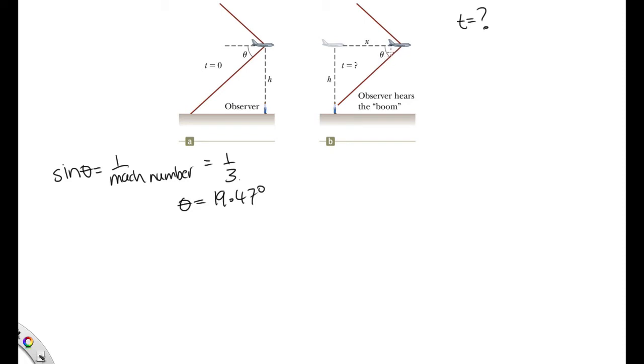Now this is our angle theta here, 19.47 degrees. So tan theta is equal to opposite over adjacent, which is h over x. Now h is a known number, and theta is known.